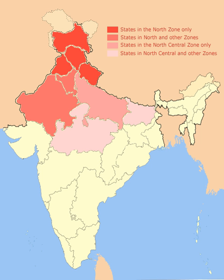The other animals found in large numbers are the Indian rhinoceros, elephant, jungle cats, leopard cats, fishing cats, jackals, civets, sloth bears, sambar, otters, crocodiles and chital.